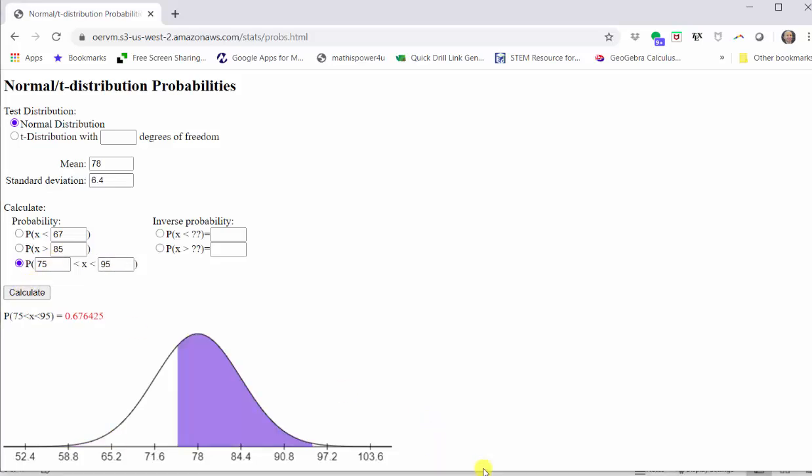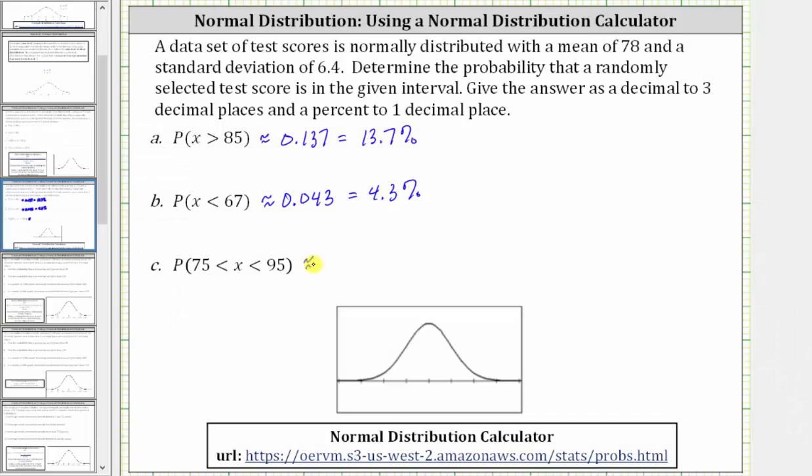Once again, notice how the area below the curve is shaded between the test scores of 75 and 95. This area represents the probability, which is given in red, which to three decimal places is approximately 0.676. Which is equal to 67.6%. I hope you found this helpful.